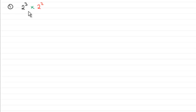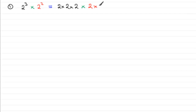What we've got here is 2 cubed multiplied by 2 squared, or 2 to the power 3 multiplied by 2 to the power 2. 2 cubed is short for 2 being repeatedly multiplied by itself 3 times over. And then we're multiplying that with 2 squared, which is 2 repeatedly multiplied by itself 2 times over. I've colour coded this to bring out the essential features of each part. So our final answer is simply 2 repeatedly multiplied by itself 5 times over — 2 to the power 5.